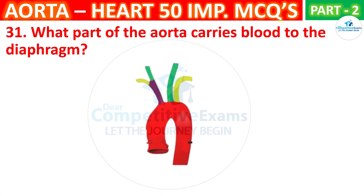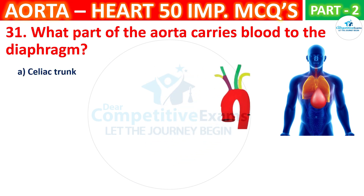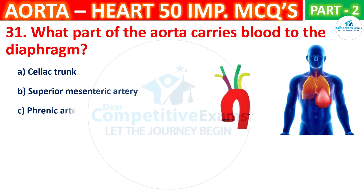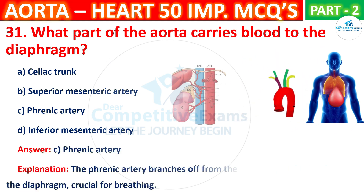What part of the aorta carries blood to the diaphragm? Your options are: Celiac trunk, Superior mesenteric artery, Phrenic artery, or Inferior mesenteric artery. The correct answer is C, that is phrenic artery. The phrenic artery branches off from the aorta to supply blood to the diaphragm, crucial for breathing.